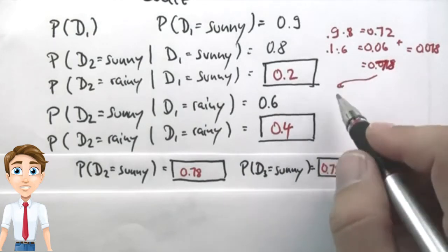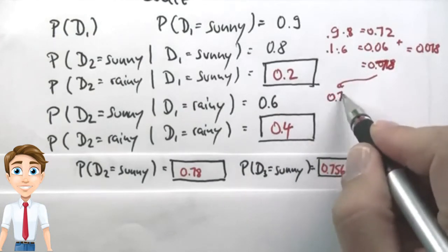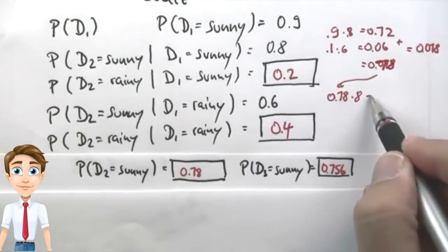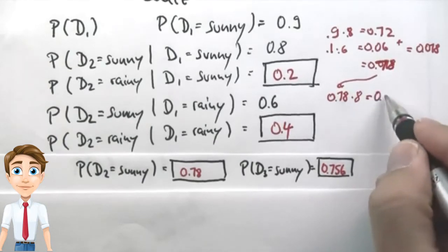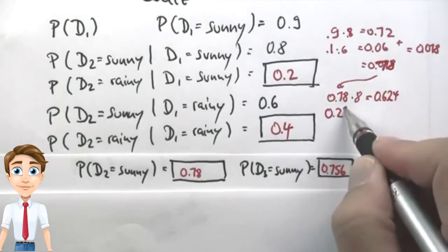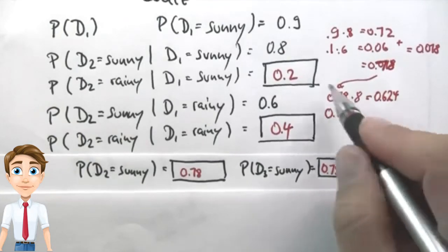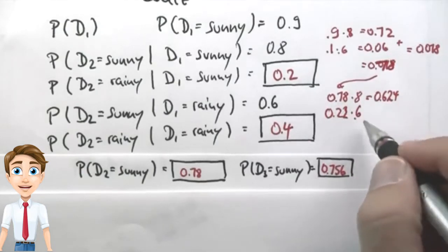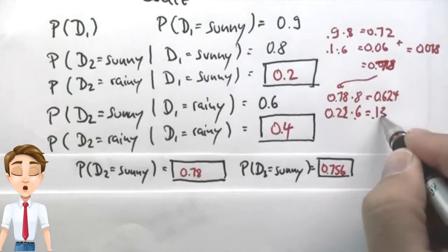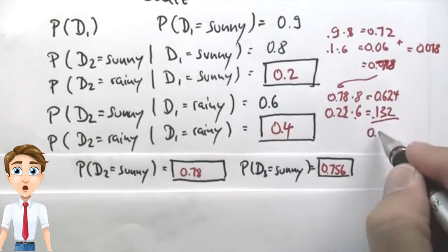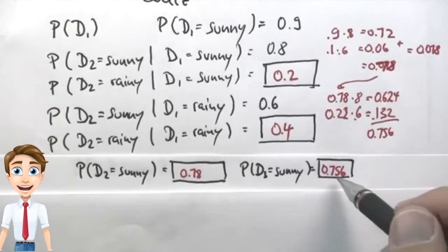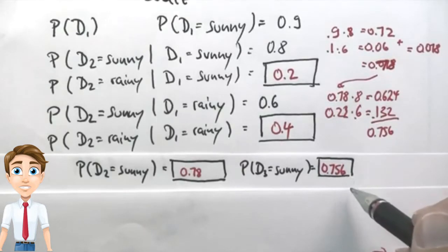Now for the next day, we know our prior for sunniness is 0.78. If it is sunny, it stays sunny with 0.8 probability. Multiplying these two things gives us 0.624. We know it's rainy with 0.22 chance, which is the complement of 0.78. At 0.6 chance it moves to sunny. If you multiply those, 0.132. Adding those two things up gives us 0.756. So to some extent, it's tedious to compute these values, but they can be perfectly computed as shown here.